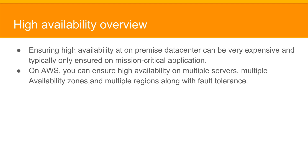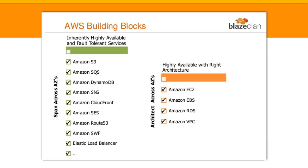First, we will study about high availability. Ensuring high availability at an on-premise data center can be very expensive and is typically only ensured on mission-critical applications. On AWS, you can ensure high availability across multiple servers, multiple availability zones, and multiple regions, along with fault tolerance. Some services are inherently highly available, while others are highly available with the right architecture.